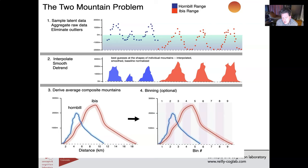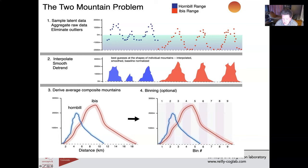You get your data, interpolate it, come up with reasonable estimates of mountains after imputing missing data, and then you average the mountains in the Ibis Range and Hornbill Range. What you end up with is a confidence interval around an interpolated average mountain for each range — and those averages are corrected for where the mountains start, since some start at sea level and some start much higher. You can apply binning to get comparisons within altitude ranges.